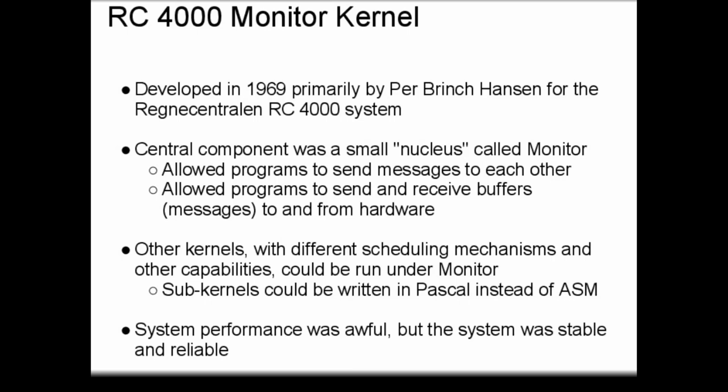Other kernels with different scheduling mechanisms and other capabilities could be run under monitor. In those days, it was not clear that multiprogramming was really a desirable feature for computing. Thus, someone could write a multiprogramming-capable kernel and run it as a subkernel under the monitor system. Importantly, this was also the first system that allowed subkernels and systems-level software to be written in a high-level language — in this case, Pascal. The system performance was quite poor; Brinch Hansen stated the OS was so slow at IPC tasks that tasks often failed to complete on time. However, the system was stable and reliable, making it successful in computer science history, even if not commercially.